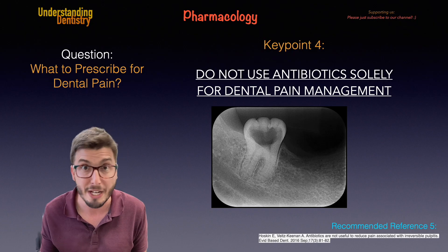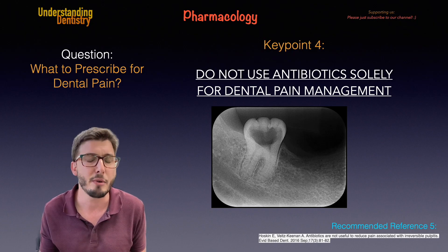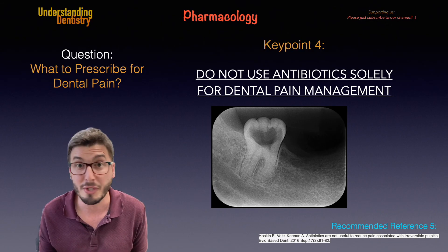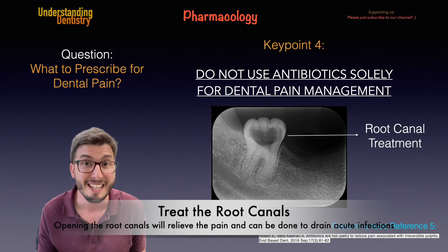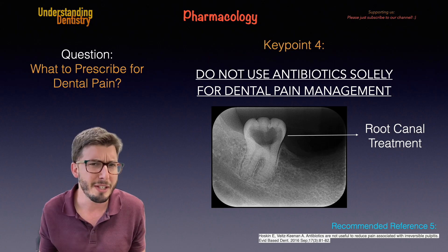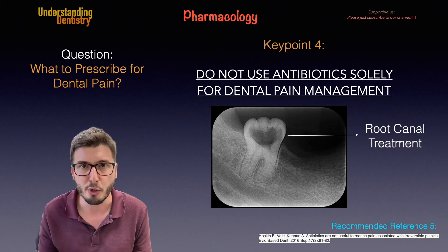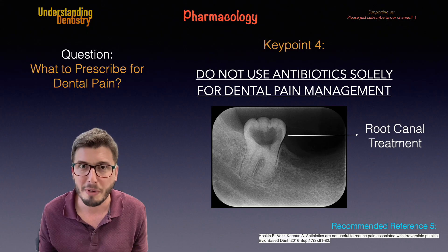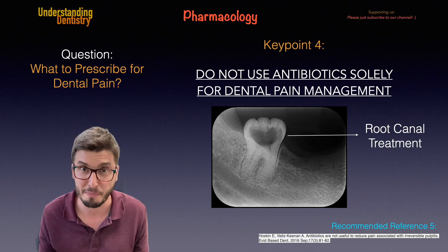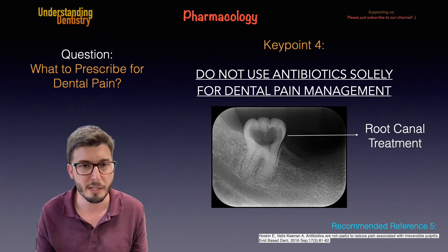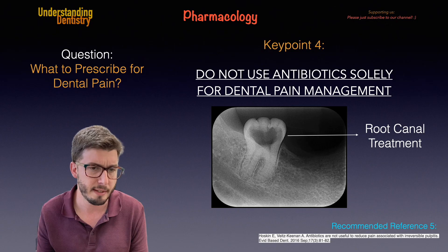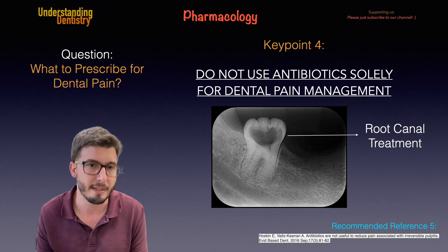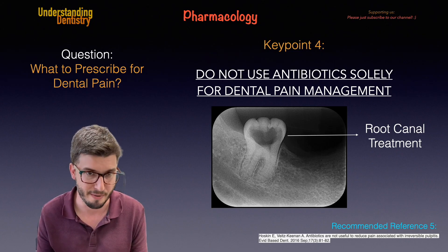For example, if you have a periapical radiograph showing caries reaching the pulp chamber and root canal, the best pain management is to treat the root canal. If you cannot see the patient or treat the root canal immediately, proceed with analgesics while the patient waits for the appointment. But if you can open the root canal, please do that instead of prescribing antibiotics — and note that sometimes extraction may be the indicated treatment depending on the clinical situation and prosthetic plan.